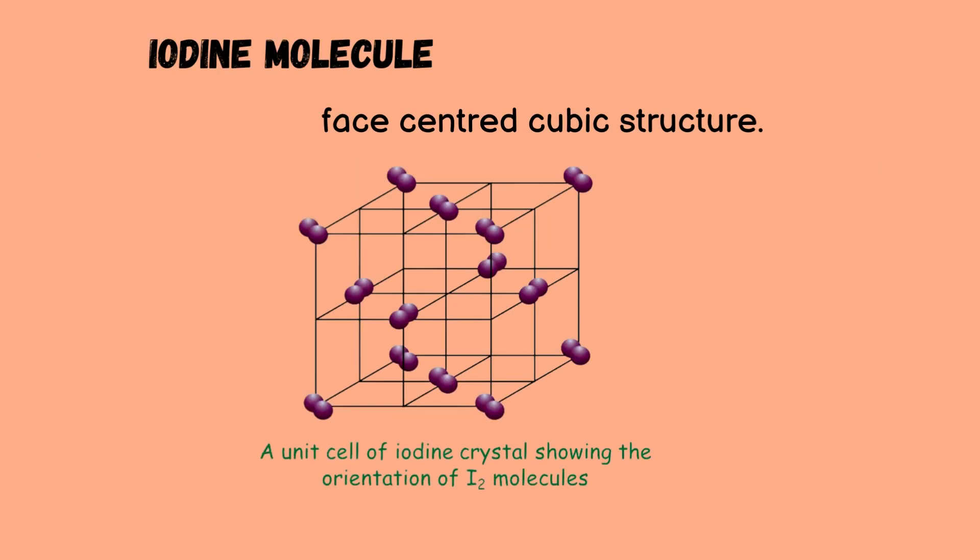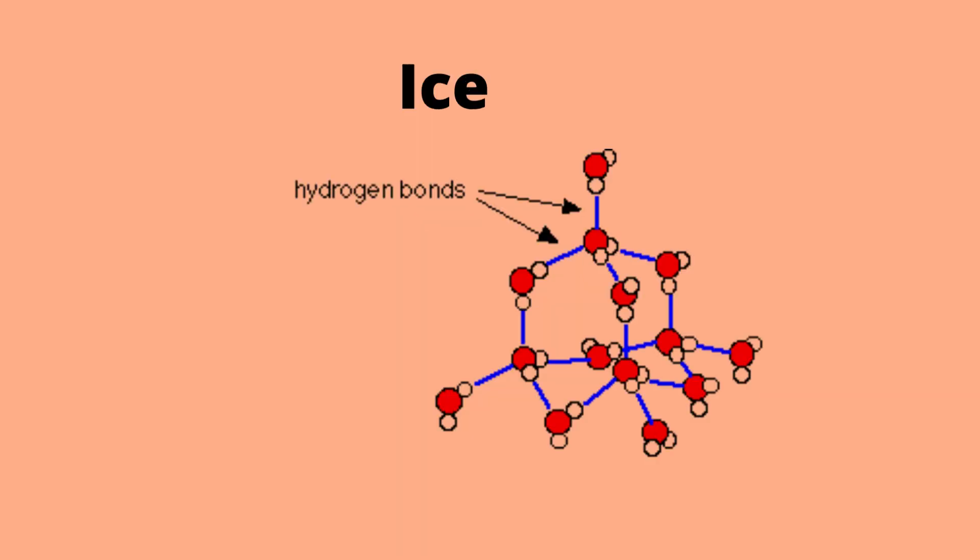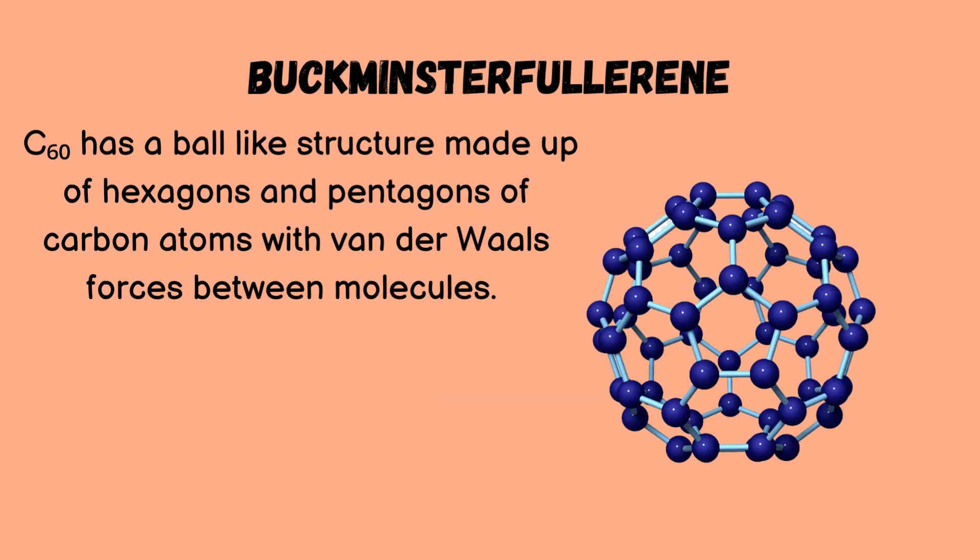For example, the iodine molecule has an FCC structure. Ice has hydrogen bonding. Buckminsterfullerene (carbon-60) has a ball-like structure made up of hexagons and pentagons of carbon atoms, with van der Waals forces between molecules.